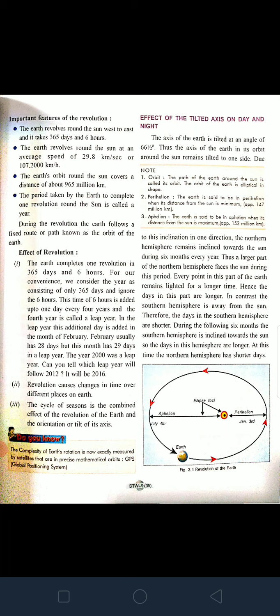These six hours, after four years, are added to make a leap year. A leap year is a year which comes after every four years, in which February has an extra day — that is, February has 29 days. So those six hours over four years add up to become one leap year.